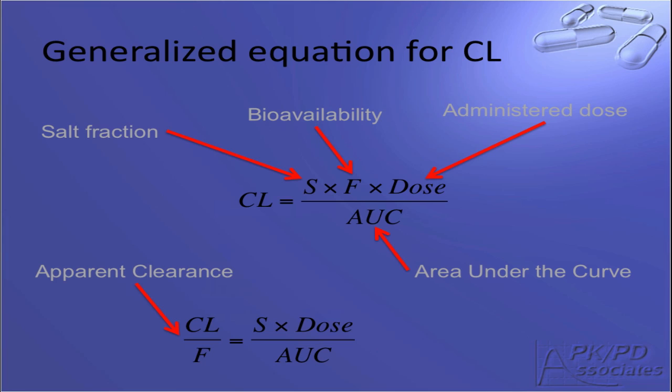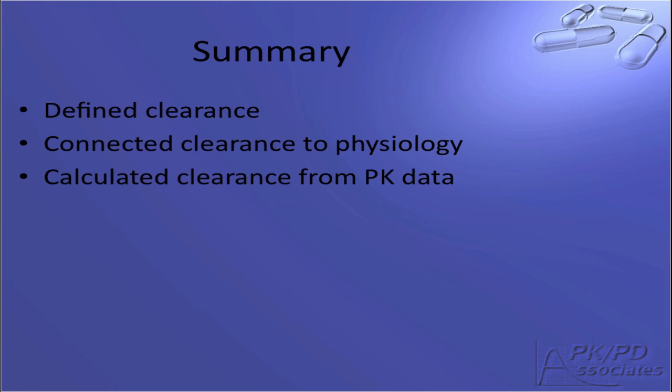This apparent clearance is useful when making comparisons within a single route of administration. We have defined clearance as the method the body uses to remove drug from the body. In addition, we have connected the PK parameter clearance to the physiology of the liver, kidneys, and lungs. And finally, we discussed a method for calculating clearance from pharmacokinetic concentration time data.